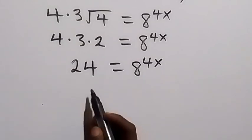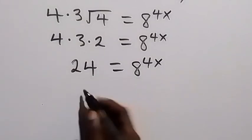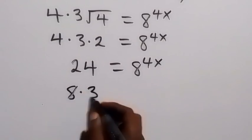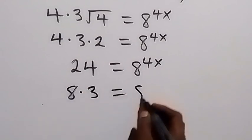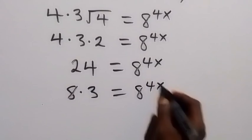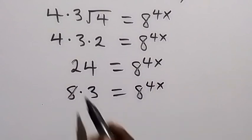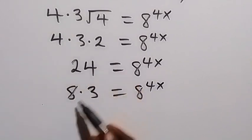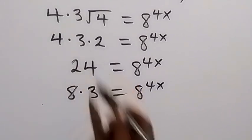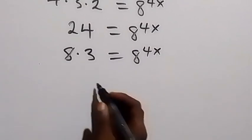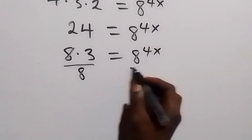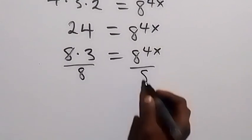We can factor 24 as 8 times 3, which equals 8 raised to power 4x. This is the same as 4 times 2, which is 8, times 3. From here, we divide both sides by 8.